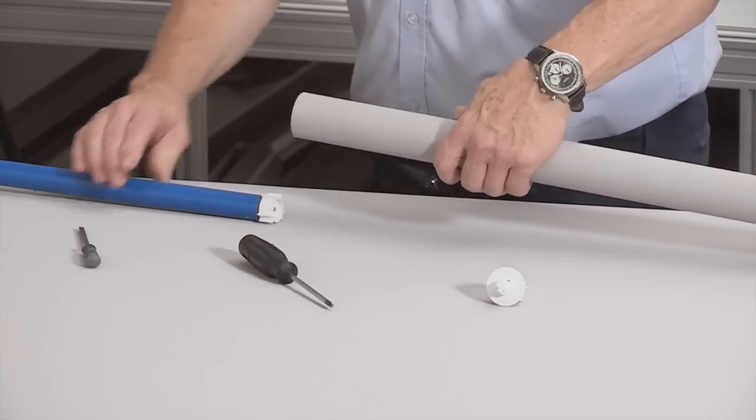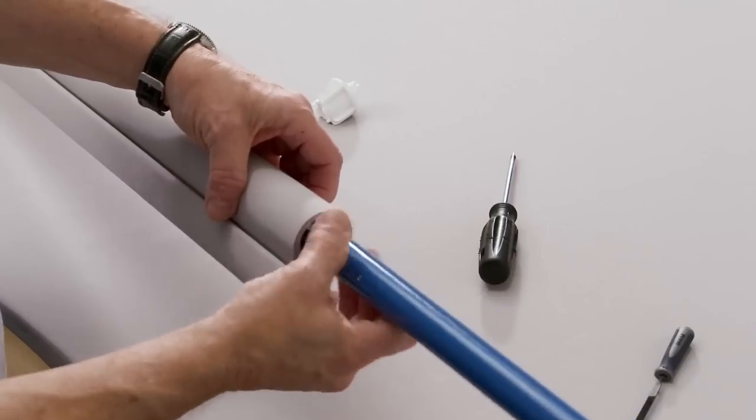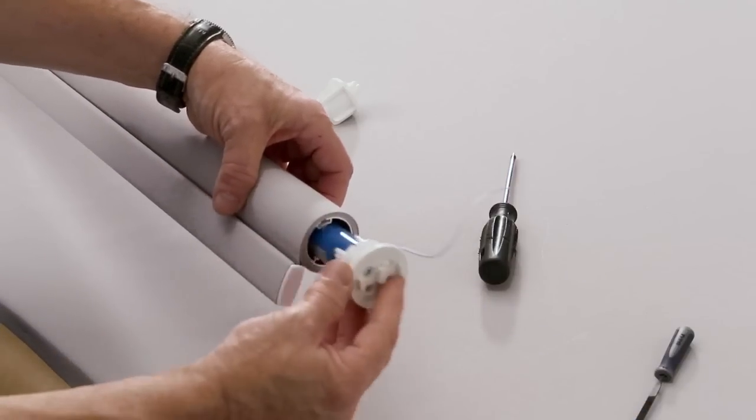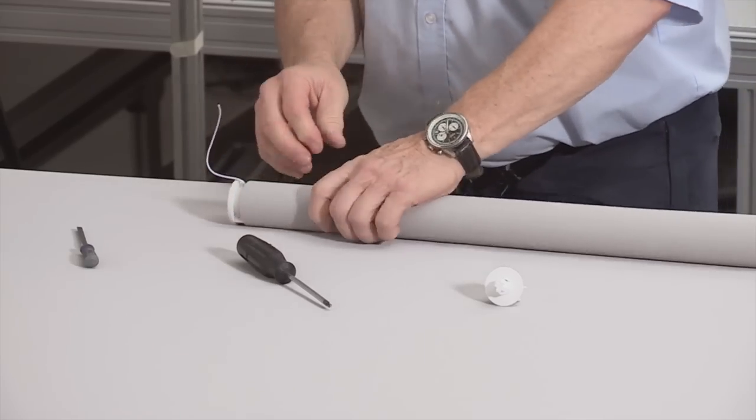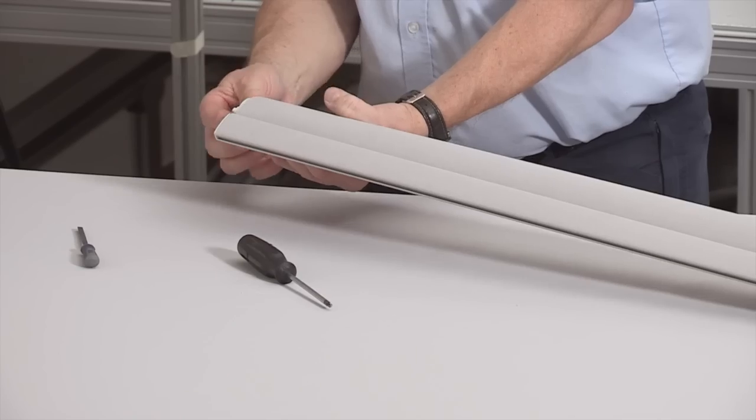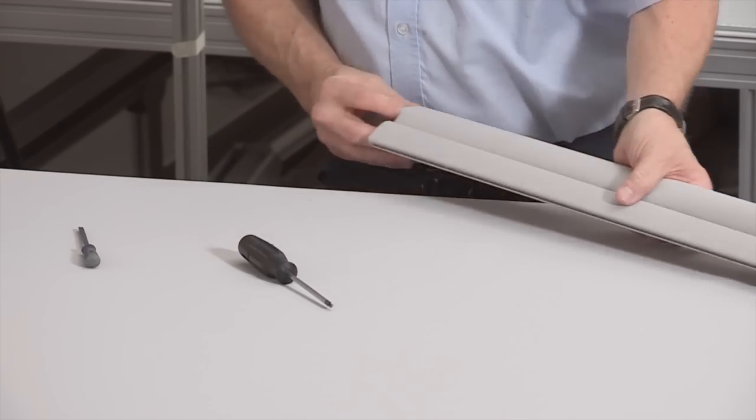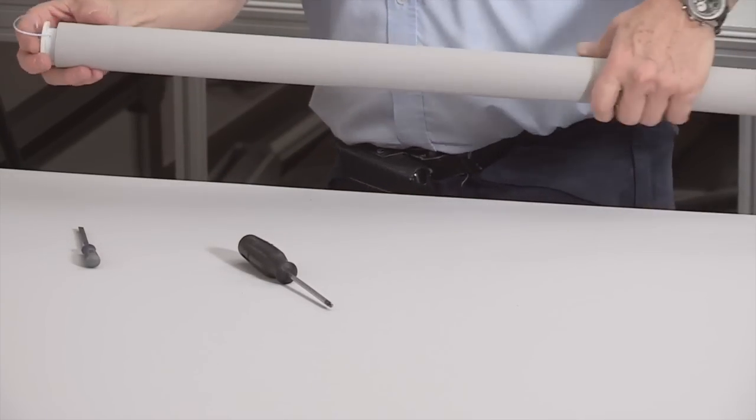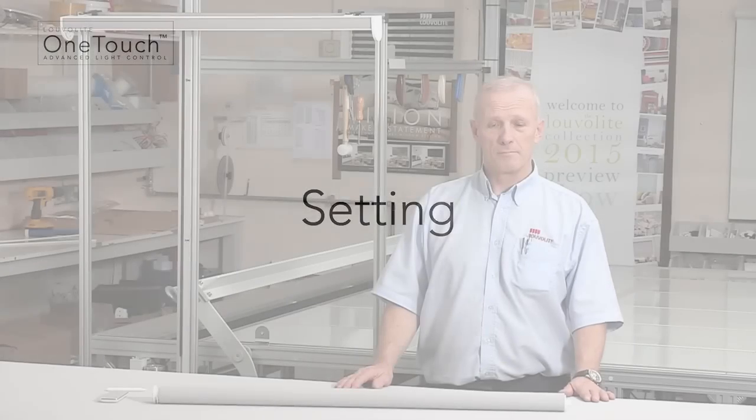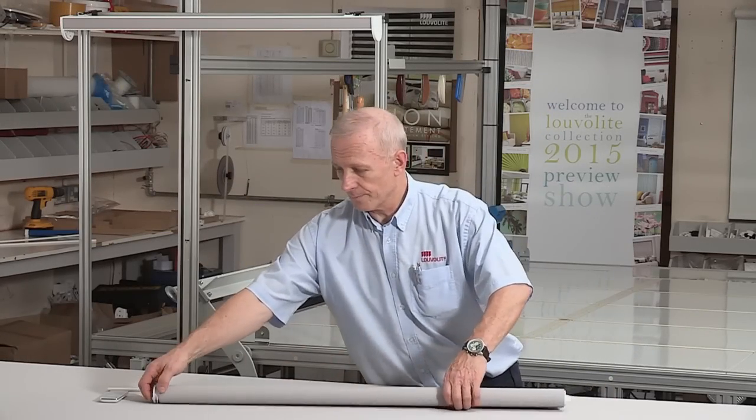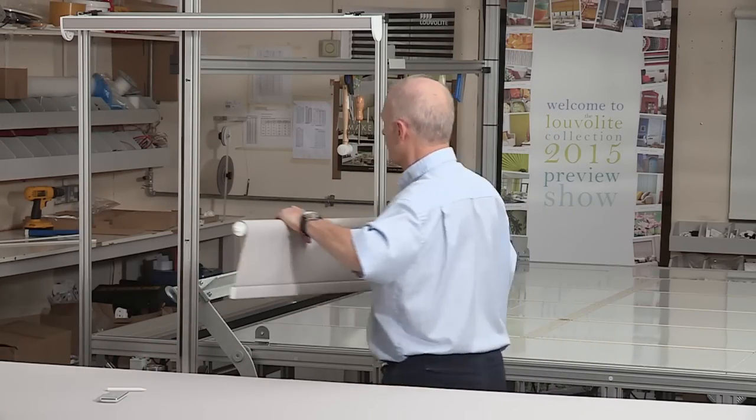Insert the motor into the tube. Insert the idle end into the tube. The blind is now ready for setting. Fit the blind into the open cassette.